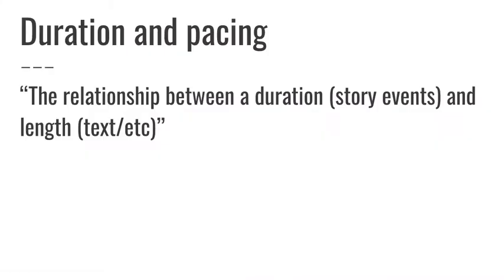Another dimension of temporality is the relationship between duration and pacing. Consider a story where the events take place over five years — that's the duration of the events — but the length of the story could be five minutes, five hours, 30 seconds, 30 words, or 10 characters. That relationship between the duration and the length is basically the pacing. A five-year story told in 30 characters is a very high-paced, fast-paced story. So again, consider that in your story.